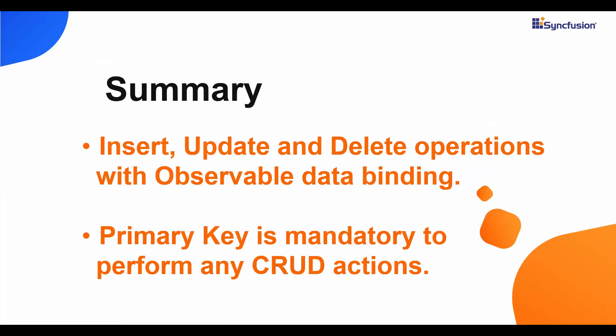Let me summarize the important points from this video. We've seen how to handle insert, update, and delete operations on the Angular grid with observable data binding. We've also seen that the primary key plays a major role in performing any CRUD actions on the grid. Finally, make sure you are maintaining the same observable instance for every CRUD action on the grid. If you have any further queries, please post your comments below. Thank you for watching — if you find this video useful, click the like button and subscribe to our channel.